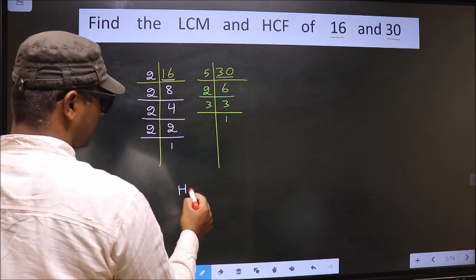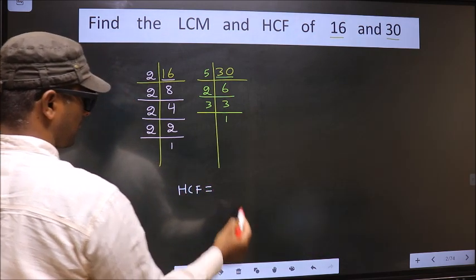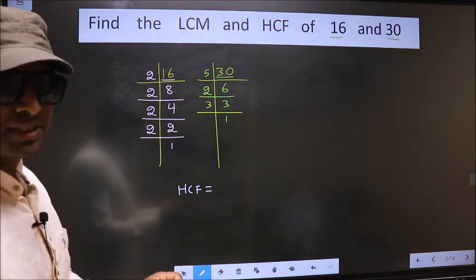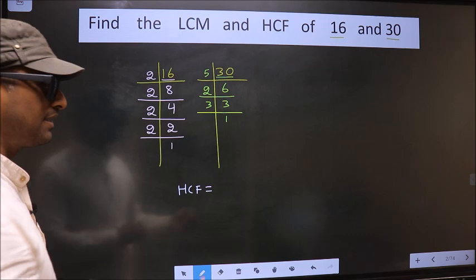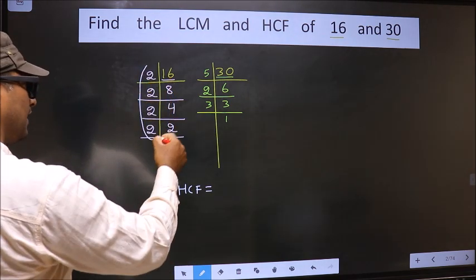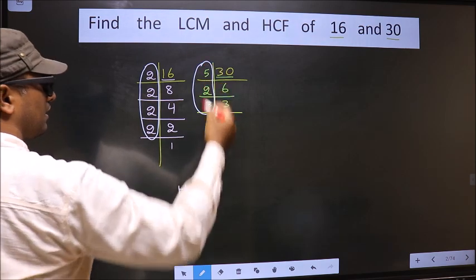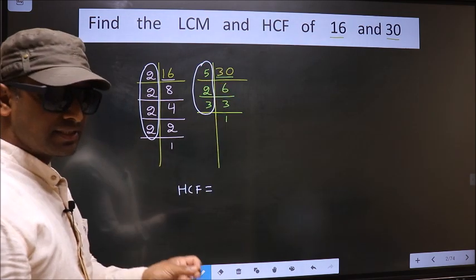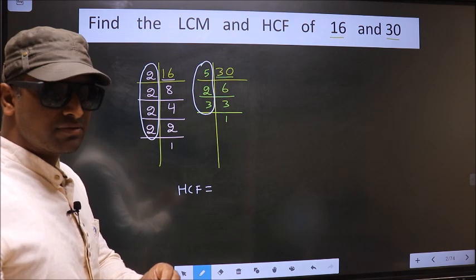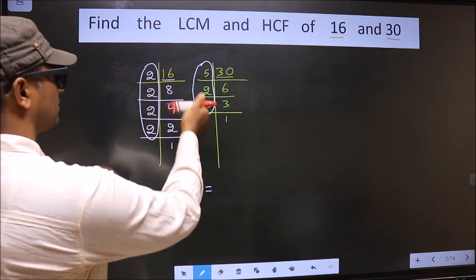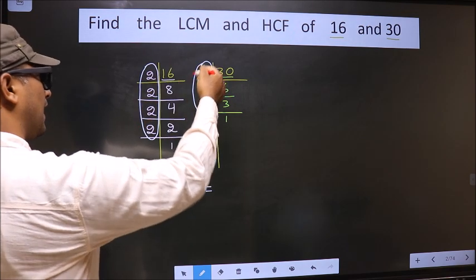Now our HCF is, HCF is the product of numbers which should be present over here and also here. I repeat, HCF is the product of numbers which should be present in these two places. Here and here.